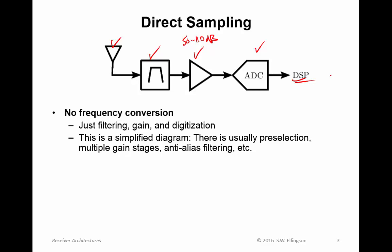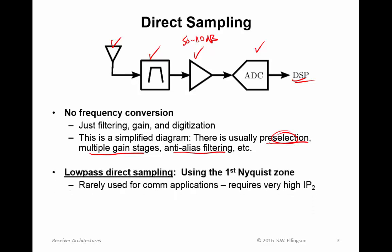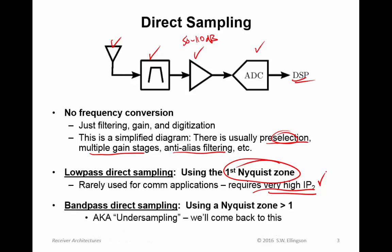Note this is a simplified diagram. Usually there are several filters — one doing pre-selection, multiple gain stages, anti-alias filtering separate from the pre-selection, and so on. But there is only filtering and gain, not frequency conversion. One variant is low-pass direct sampling, where we use the first Nyquist zone. This is rarely used for communications applications because it requires very high second-order linearity, since signals in the first Nyquist zone can create second-order harmonics appearing in both the first and second Nyquist zones.